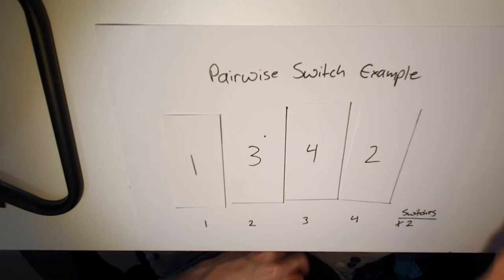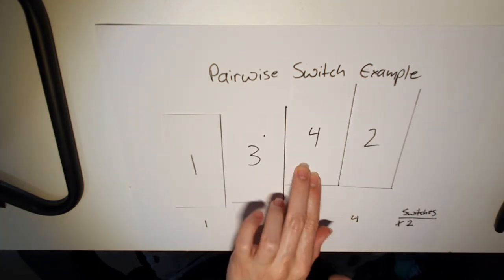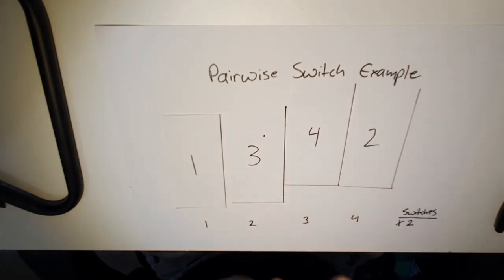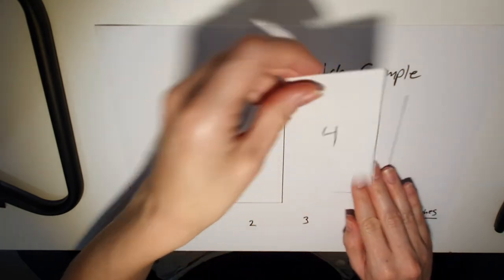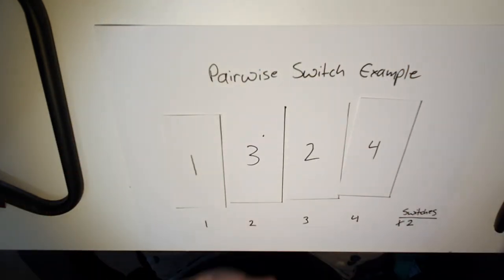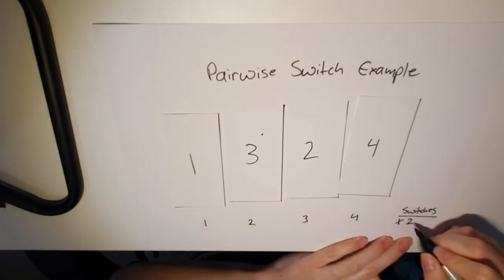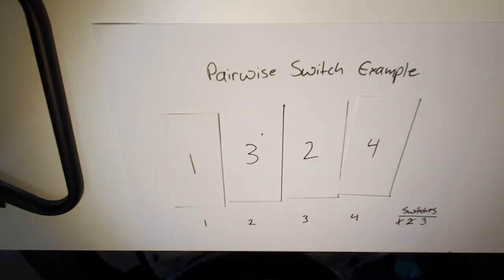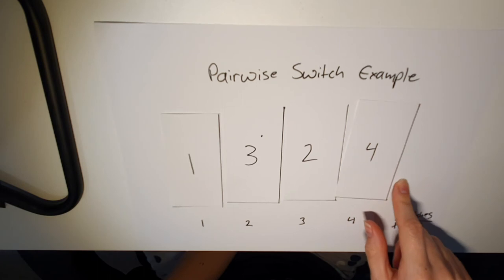Then we check the next pair. Is four less than two? It's not. So we switch them around. And now we've made three switches. We've reached the end of our cards. Are they in order yet?